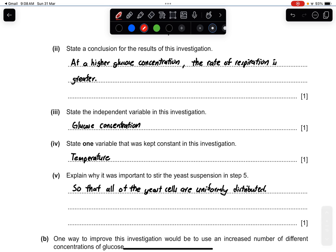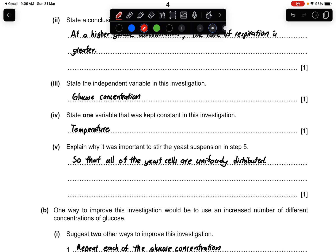Part 4: State one variable that was kept constant in this investigation. So there are a lot of constant variables they have already kept. It's the volume of the concentration of the yeast, total volume of glucose, the type of yeast, and the time when it reaches equilibrium. Temperature is definitely one, and then the volume or the concentration of the methylene blue being added. Part 5: Explain why it was important to stir the yeast suspension in step 5. This is another common paper question they will ask - the importance of stirring during your investigation. If you do not know how to answer this, just remember two words: uniformly distributed or distributed uniformly. Both ways are acceptable.